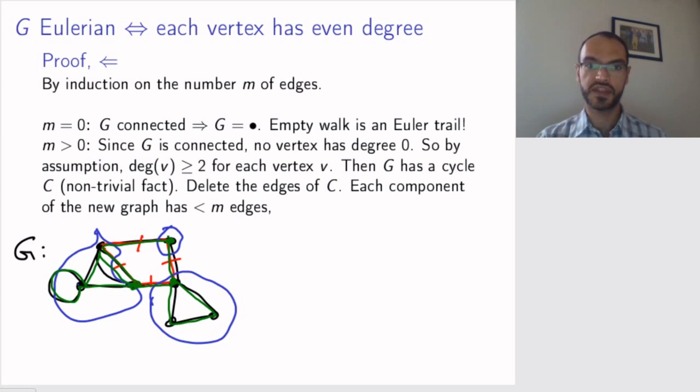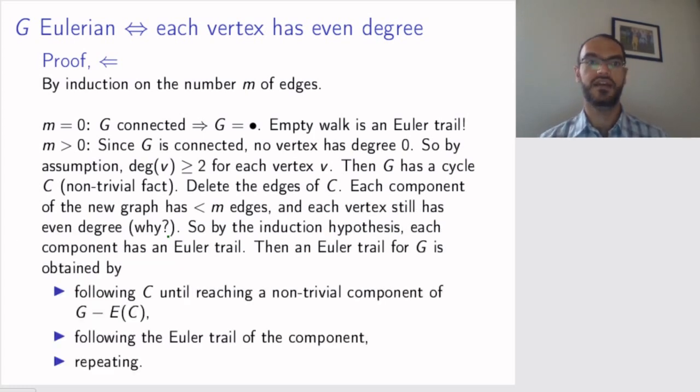So, this proves that if I have a connected graph where each vertex has even degree, then the graph is Eulerian. This completes the proof of Euler's theorem, except for this non-trivial fact that I claimed earlier about the graph having a cycle.